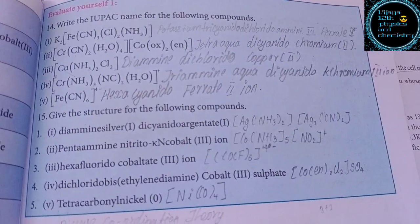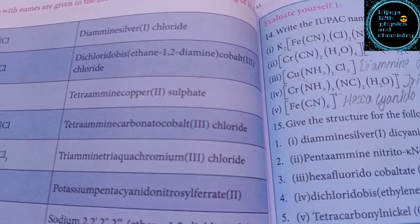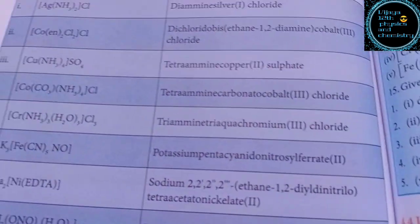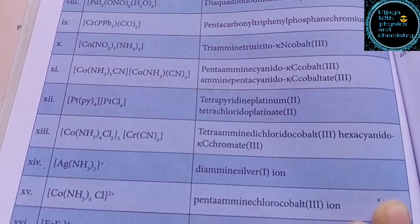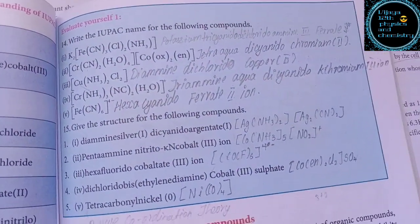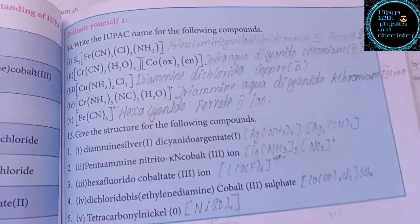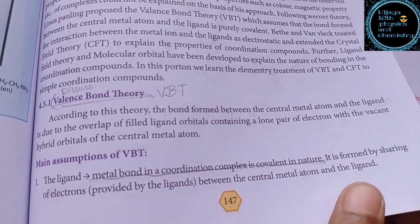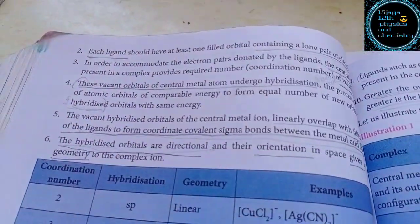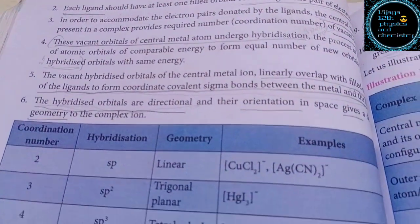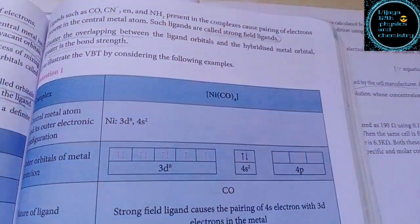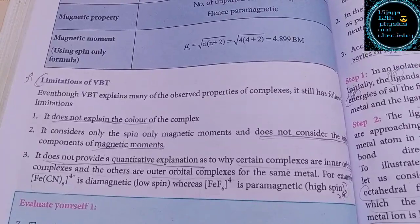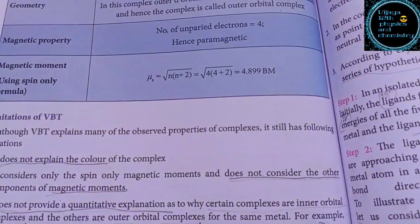If you are doing a NEET exam, you can use this helpfully. You can confirm one mark questions. VBT theory is one important theory. Now, limitations of VBT theory are very important — you have 3 more questions there.